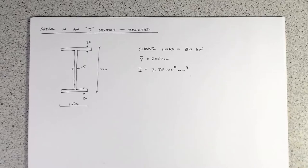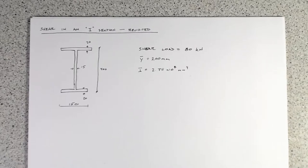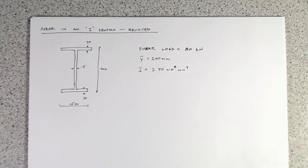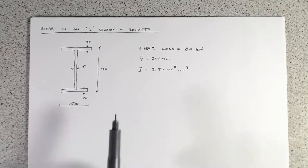In this lecture, we're going to look at the shear stress distribution in an I-section, but instead of using the shear stress where we're looking at a shear coming vertically down, we're going to use it with the shear flow that we've learned before. The I-section is 400 millimeters tall by 150 millimeters wide, a steel I-section, with an 80 kilonewton shear load applied. The Y-bar is at 200 millimeters up from the bottom, and the moment of inertia is 2.75 times 10 to the eighth millimeters to the fourth.